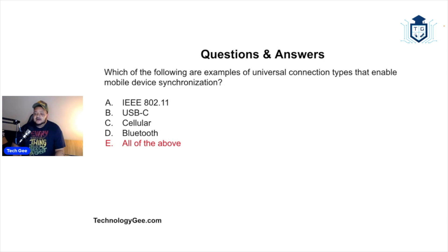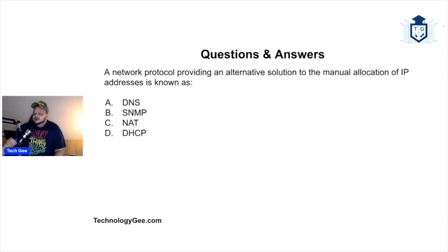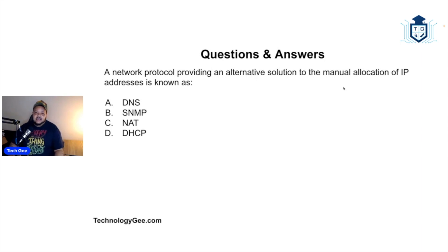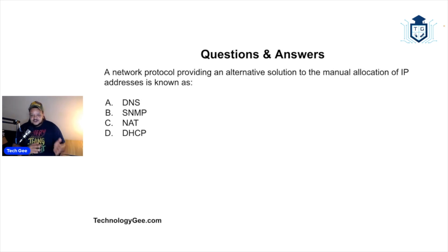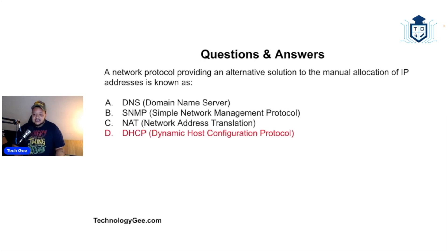A network protocol providing an alternative solution to the manual allocation of IP addresses is known as what — DNS, SNMP, NAT, or DHCP? Manual allocation means going around to every computer or device and manually inputting the IP address, default gateway, subnet mask, DNS, and other required information. Which protocol does this automatically?